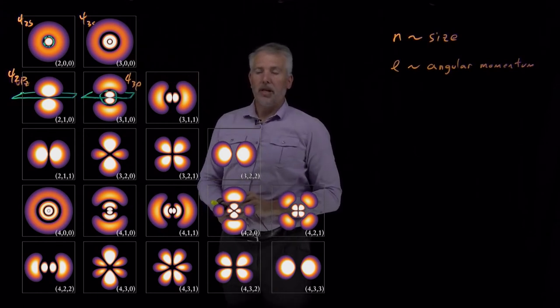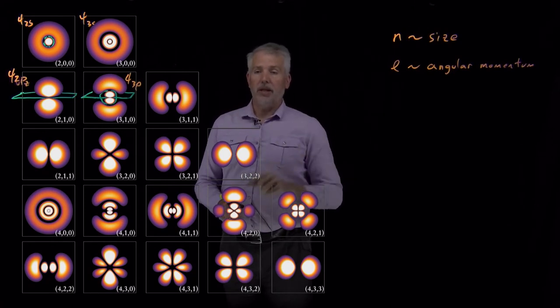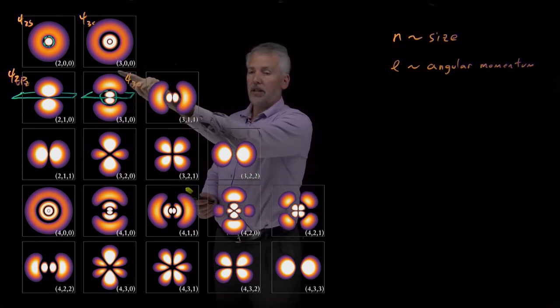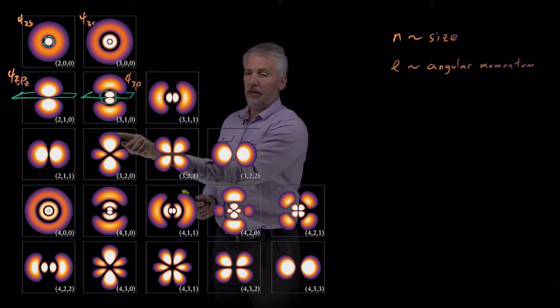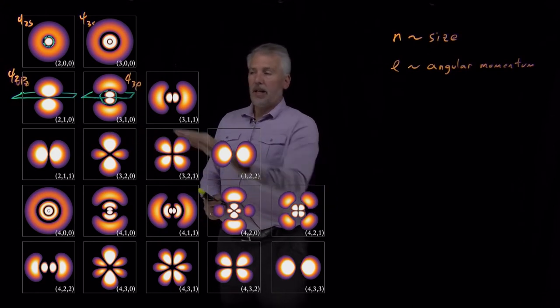If an electron has a little bit more angular momentum, meaning it's oscillating a little bit in theta, then as it oscillates from positive to zero to negative in the wave function, then that introduces a node.